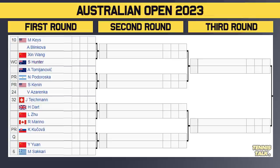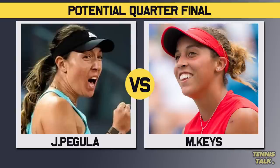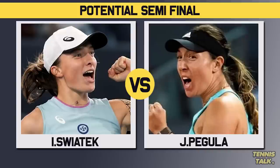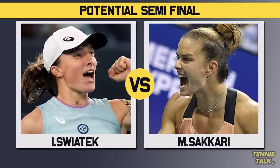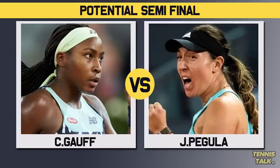The 10th seed Madison Keys takes on Blinkova in the first round. Meanwhile, Azarenka, the 24th seed, could meet Kennen in the second round — two former champions going at it, which is insane. Kuchova and the 6th seed Zverev are also in this section. By the seedings, a potential quarterfinal is Zverev versus Pagula, and a semifinal could be Pagula versus Swiatek, or Zverev versus Swiatek in the top half of the draw.